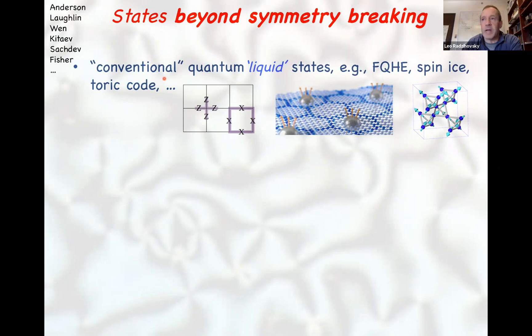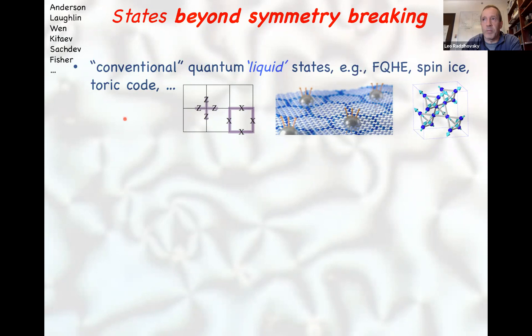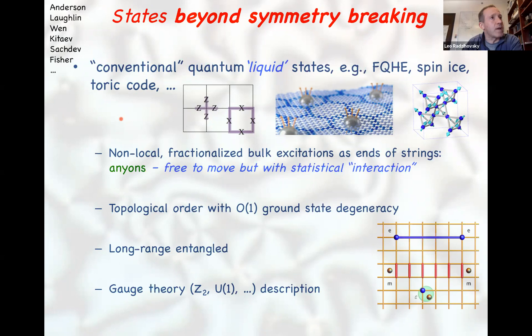Over the last 20-30 years it has become clear that there are theoretical models that definitely exhibit new phenomena outside the standard Landau paradigm. Most notably the toric code and a variety of other models — some exactly solvable — demonstrate that one can have quantum ground states that are disordered but nevertheless qualitatively distinct from a trivial insulating or conventional paramagnetic state.